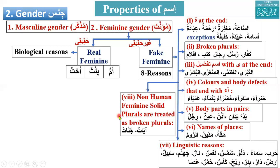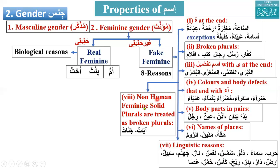The eighth type is non-human feminine solid plurals, which are treated like broken plurals. For example, aya is one aya and its plural is ayaat — a solid plural. Janna (paradise) is also non-human and its solid plural is jannaat. These non-human solid plurals are treated as broken plurals, and broken plurals are treated as she — feminine.